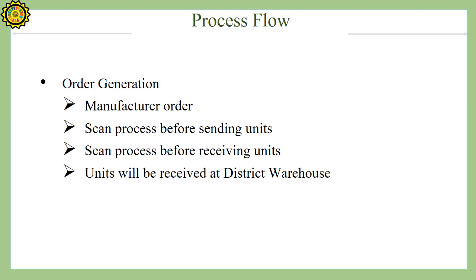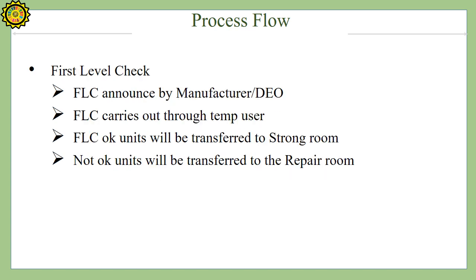Order generation: The order will first be generated for the manufacturer. Units are scanned before sending and before receiving. Units are then received at the strict warehouse. First Level Checking (FLC) is announced by the manufacturer or the DO and carried out through a temporary user. FLC OK units will be transferred to the strong room, and FLC Not OK units will be transferred to the repair room.